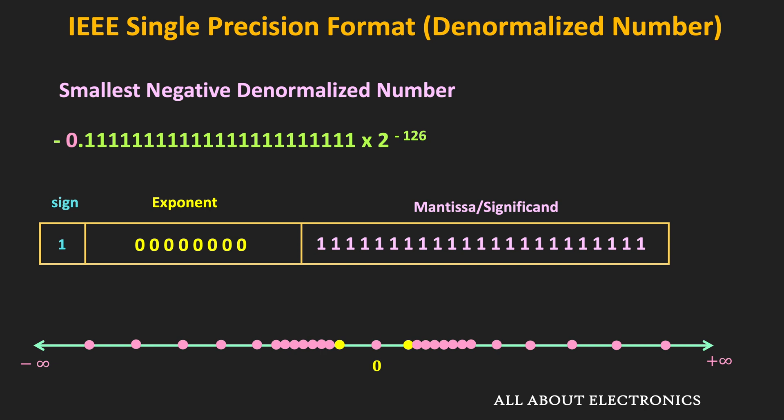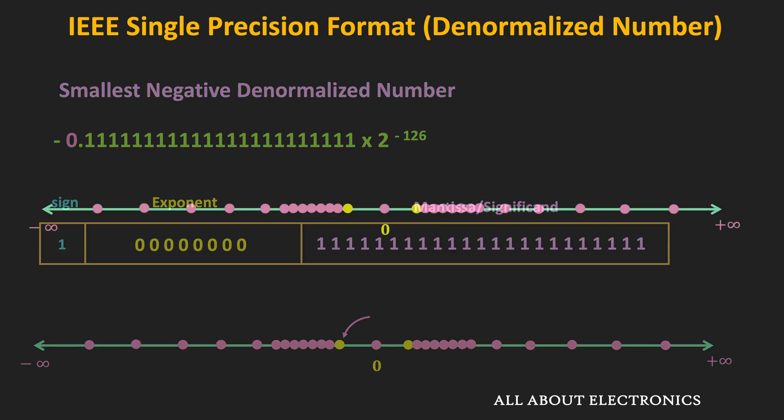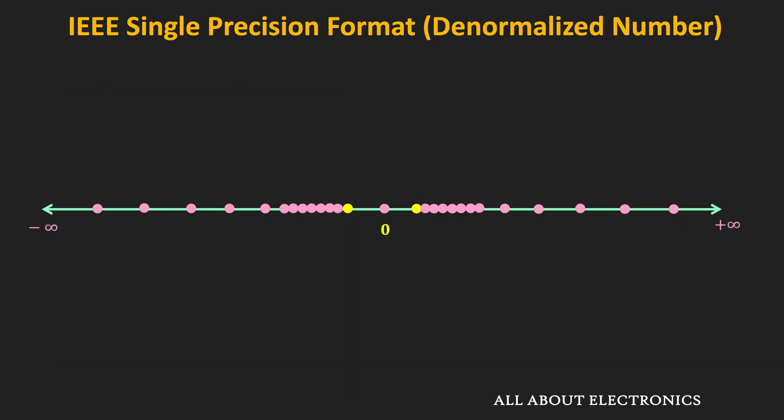On the number line, when the sign bit is 1, that represents the smallest negative denormalized number, very close to the smallest negative normalized number. As you can see, in this range there is a smooth transition from the normalized number to the denormalized number.